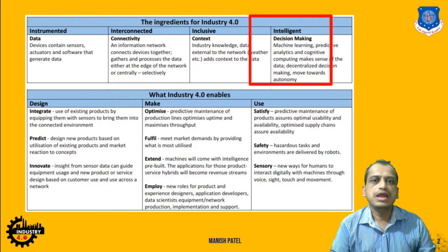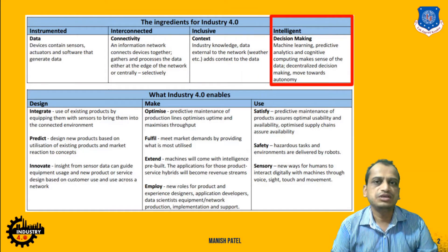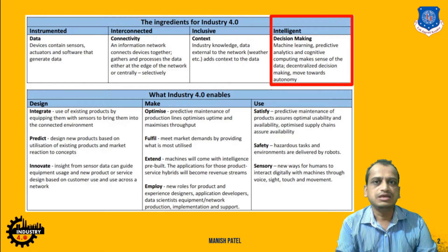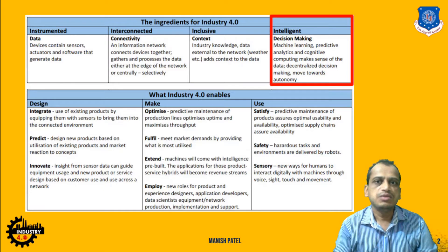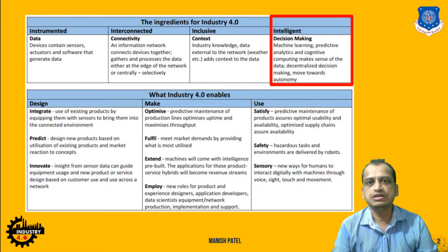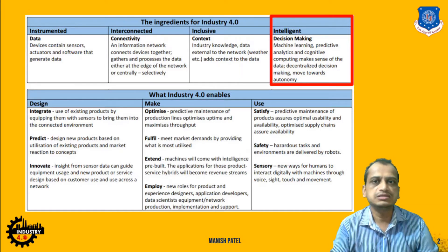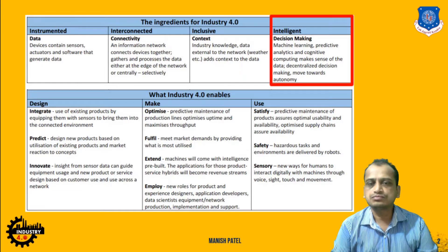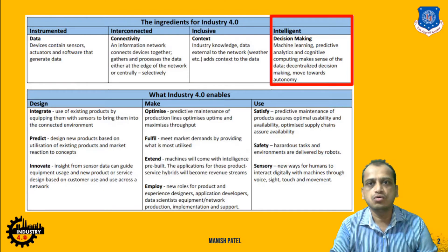Then we have 'Intelligent,' one of the key ingredients of Industry 4.0 — that is decentralized decision making. Whatever data is gathered and analyzed is used with the help of machine learning and artificial intelligence for predictive modeling and analytics. Specific areas such as maintenance and monitoring use this kind of decentralized decision making.